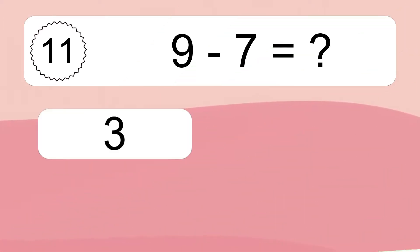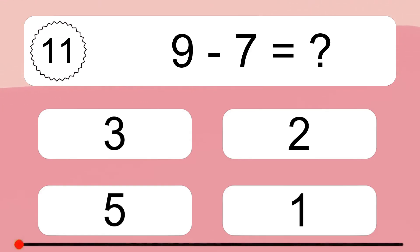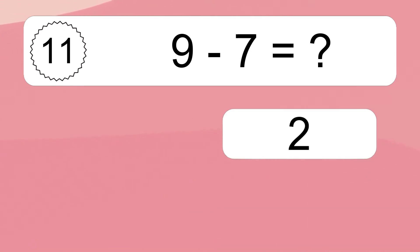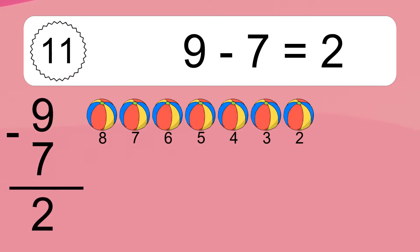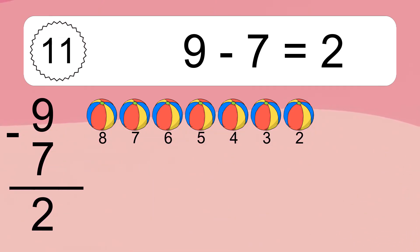9 minus 7 equals what? 9 minus 7 equals 2. Let's count it. 8, 7, 6, 5, 4, 3, 2.